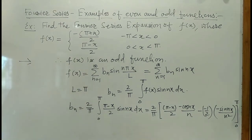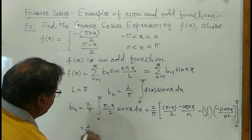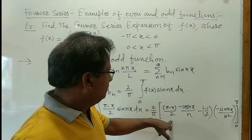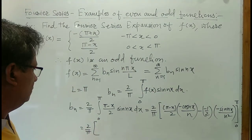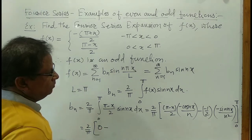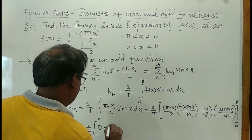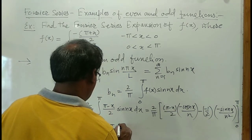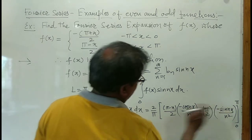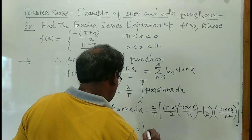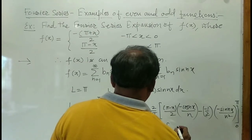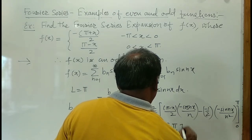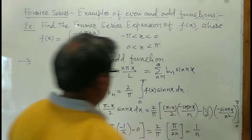Putting in the limits: at the upper limit x equals pi, the term (pi minus pi) equals 0 so that term vanishes, and sin(n pi) equals 0. At the lower limit x equals 0, we get pi over 2, and cos(0) equals 1, so we have minus 1 over n; the sin(0) term vanishes. Combining: 2 over pi times pi over 2n simplifies to give b_n equals 1 over n.